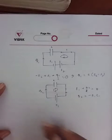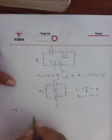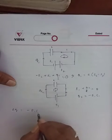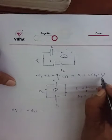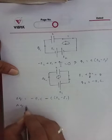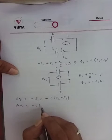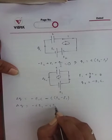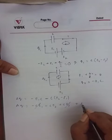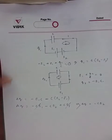Now let me find ΔQ. ΔQ equals Q2 minus Q1, which is (minus CE1) minus C(E2 minus E1). The CE1 terms cancel, so ΔQ equals minus CE2.